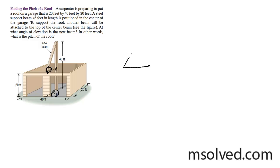Here's that plank of wood going up to the very center pole. I'm looking for this angle here, theta, and I know this is 10 feet. The height of this is 46 feet, but this is 20 feet right here. So this means that this portion right here is 26 feet.